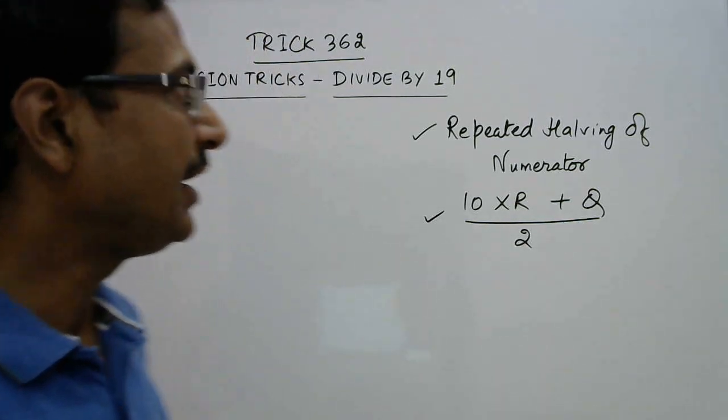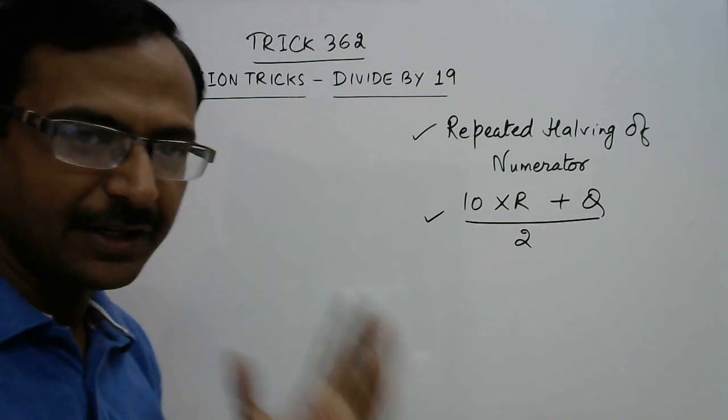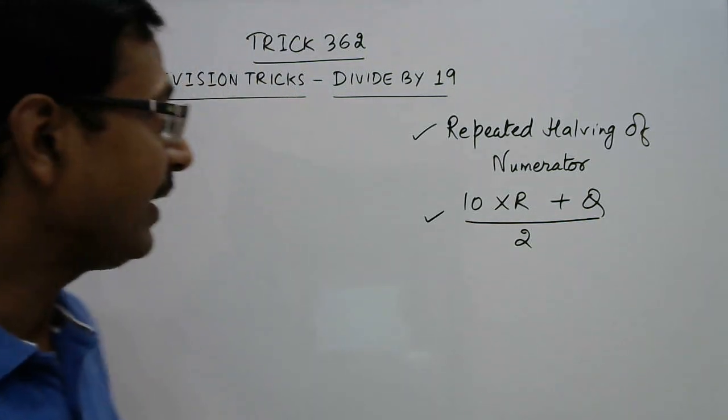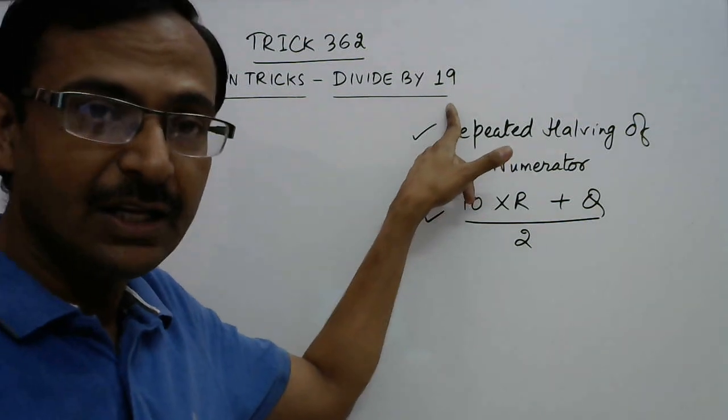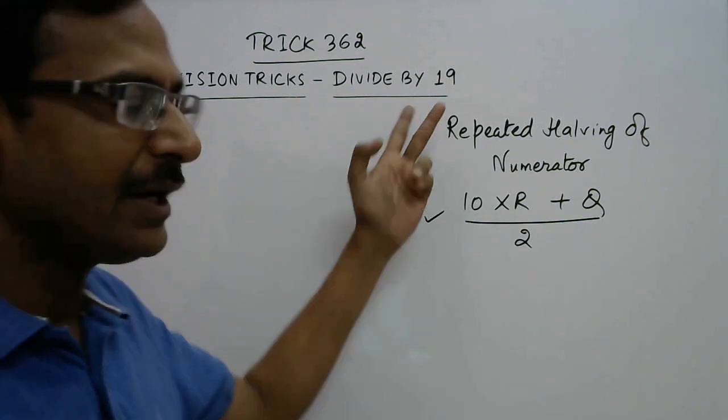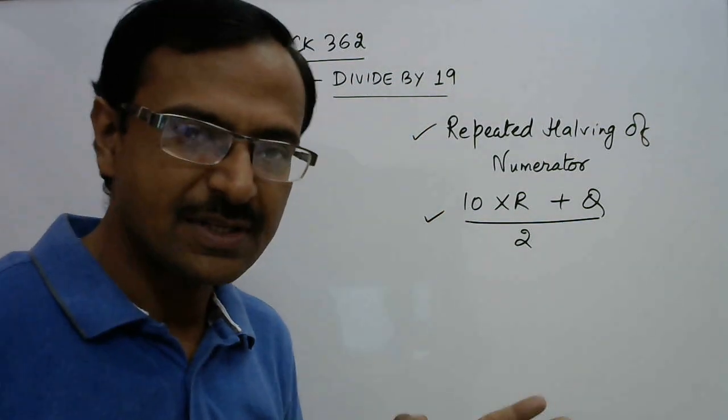Hello dear students, in trick number 362, yet another division trick. This time we are going to try and divide numbers by 19 using a shortcut without traditional division. Division by 19 involves a lot of steps if you want to follow the traditional method and you are likely to commit mistakes also.